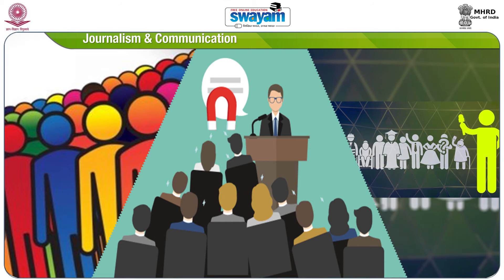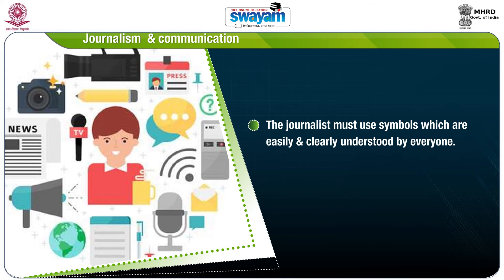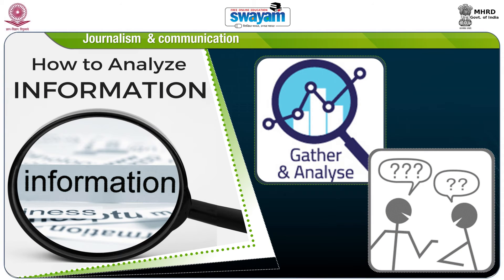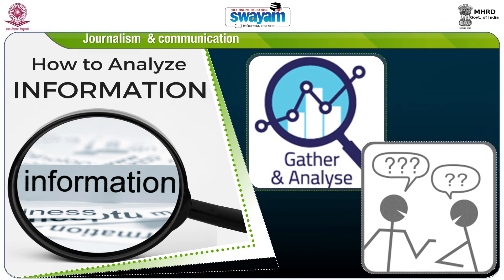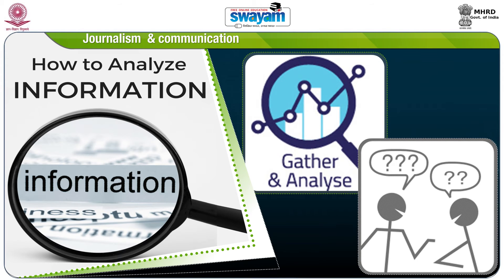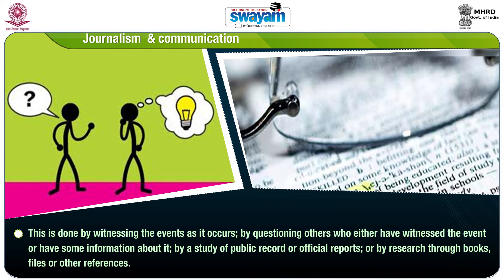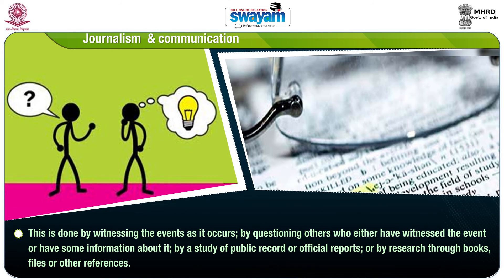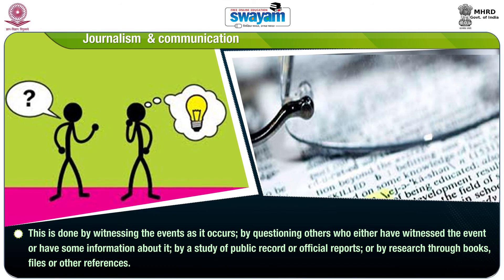The second distinction is that journalists direct their writing to all literate people, including the man in the street. Since they are communicating knowledge of current events to the general public, the journalist must use symbols which can be easily and clearly understood by everyone. The third difference is that before communicating information about events to the mass audience, a journalist gathers and analyzes it — by witnessing the event as it occurs, by questioning witnesses or those with information, by studying public records or official reports, or by research through books, files or other references.